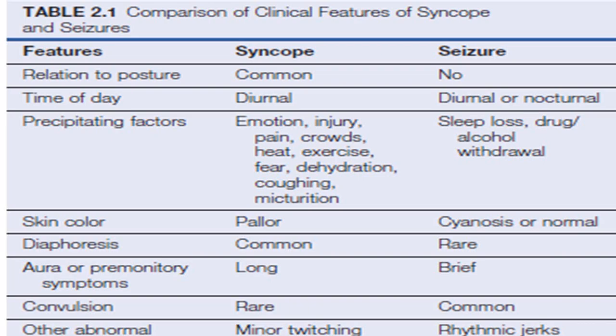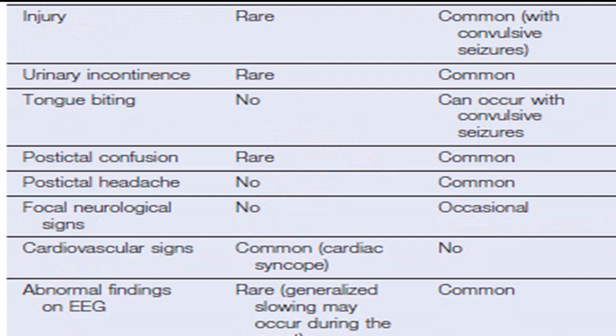Differentiating seizures from syncope: seizures can occur at any time of day, more common nocturnally; involuntary movements present; pre-aura commonly present; convulsive movements, epileptic cry, urinary incontinence, tongue biting, post-ictal confusion, headache, focal neurological symptoms and signs are more common in convulsive seizures. Cardiovascular findings are very common in cardiovascular syncope; abnormal ECG is seen in cardiovascular groups, while in convulsive seizures the ECG is normal.